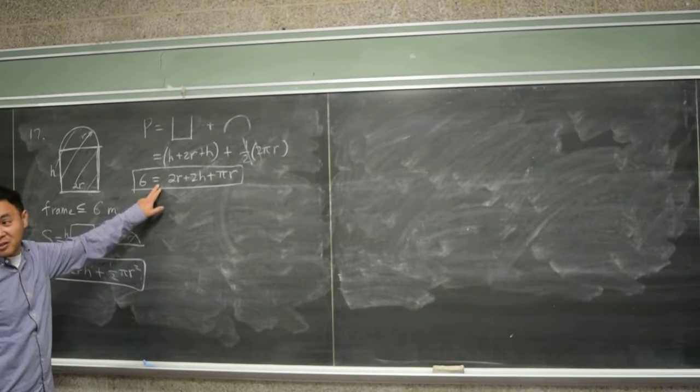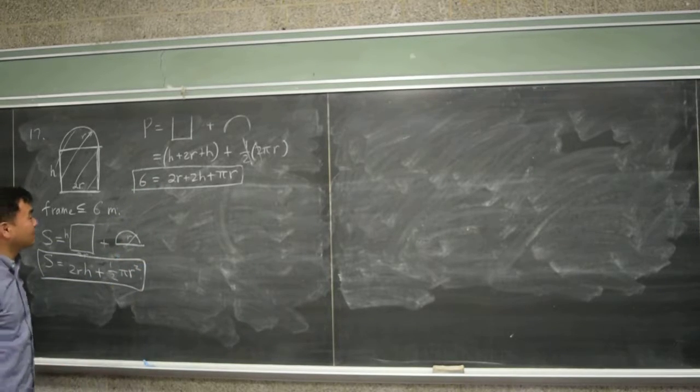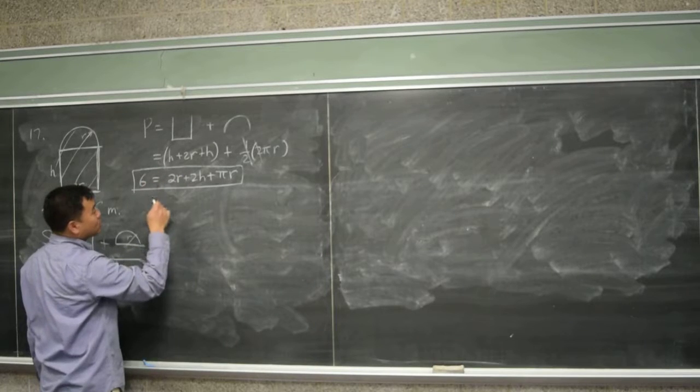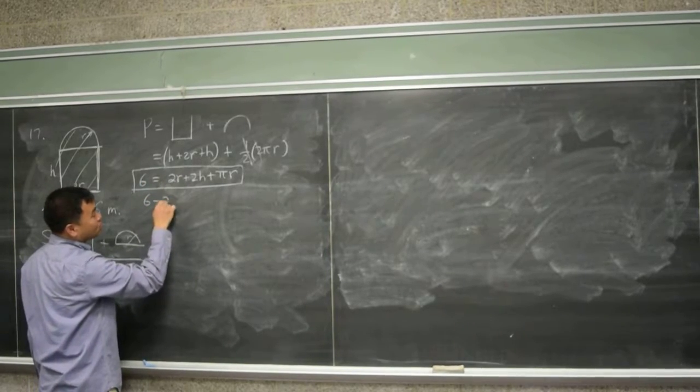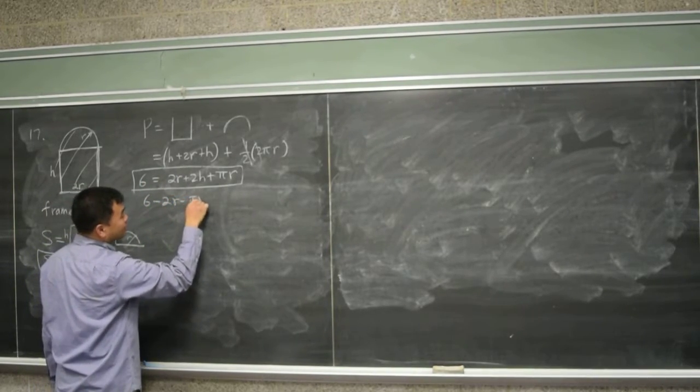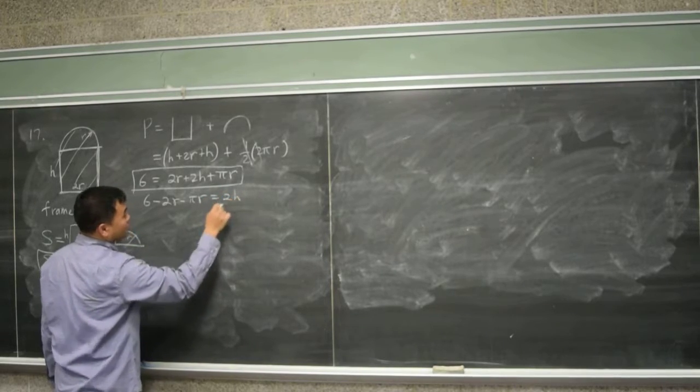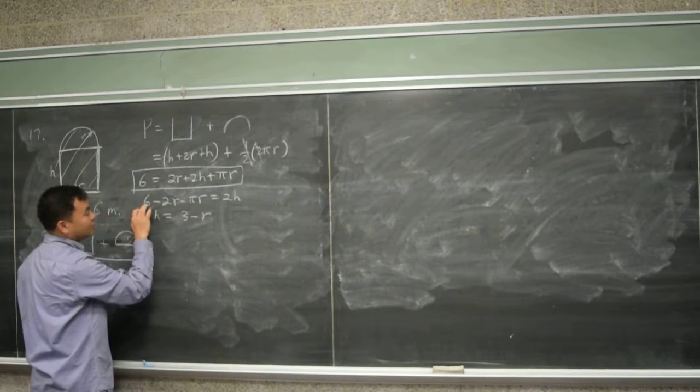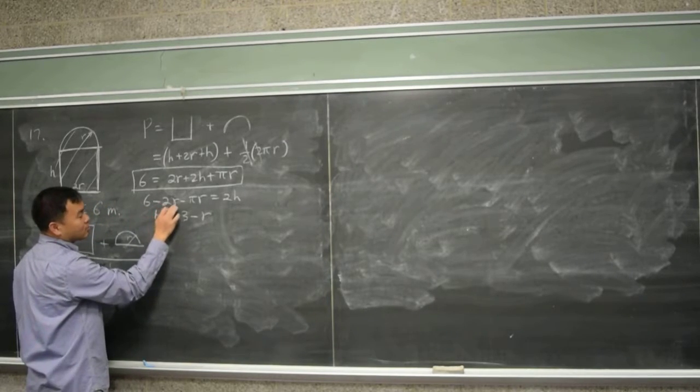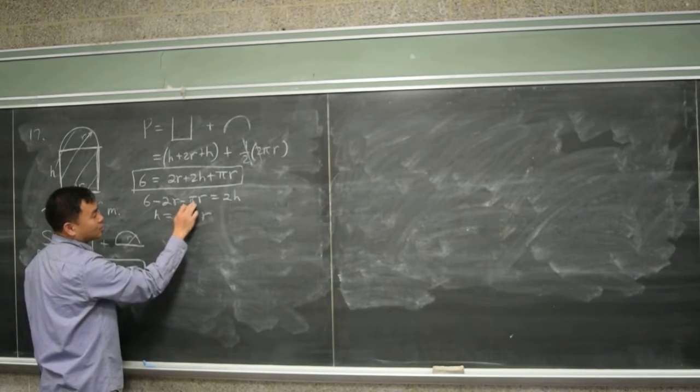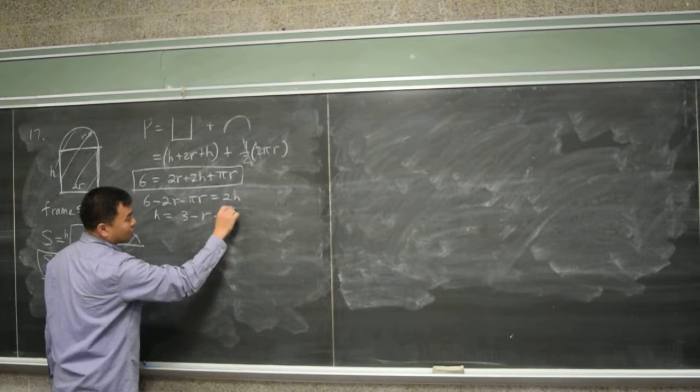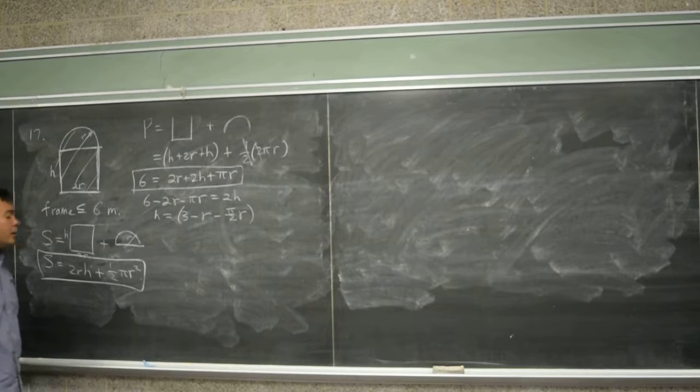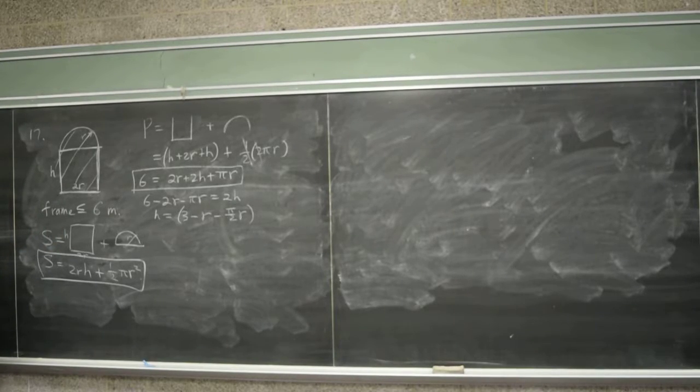I think h is easier, right? I think h is easier. We only have one h. So let's move everything to the other side. Six minus 2R minus pi R equals to 2h. And divide by two to give you three minus R. Six divided by two is three. 2R divided by two is just R. Pi R divided by two is pi over 2R. So that's your h. That's your h.